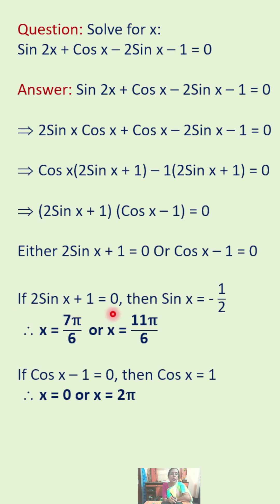If 2 sin x plus 1 equals 0, then sin x equals negative one-half. That means x is an angle from the third or fourth quadrant, so x equals 7π by 6 or x equals 11π by 6.